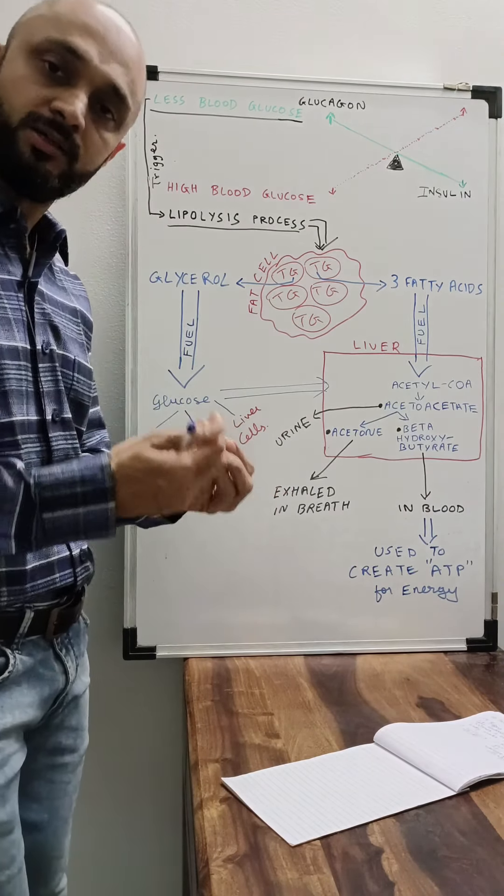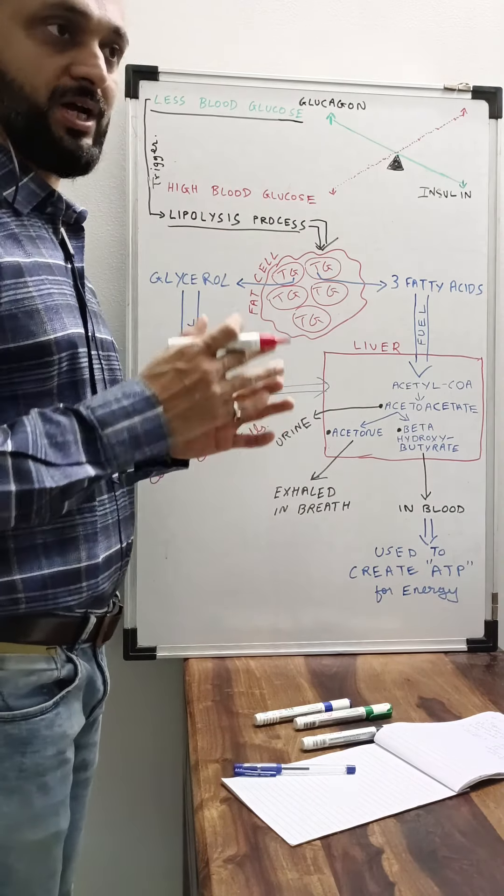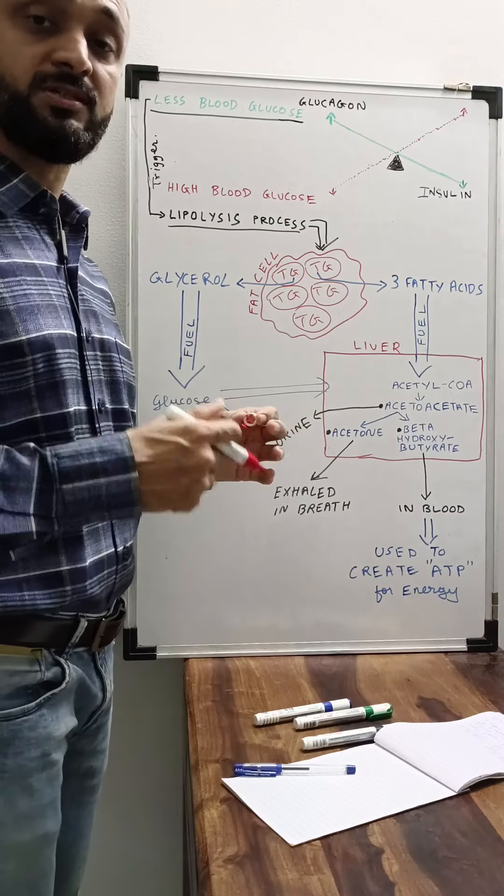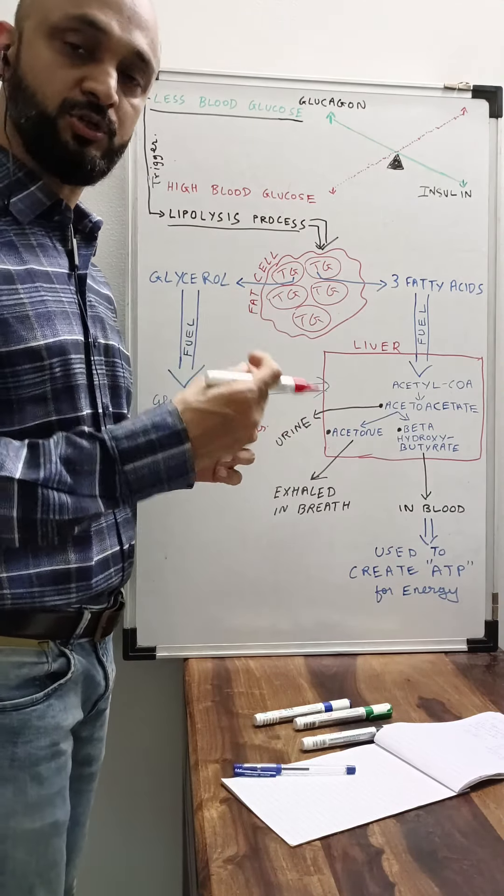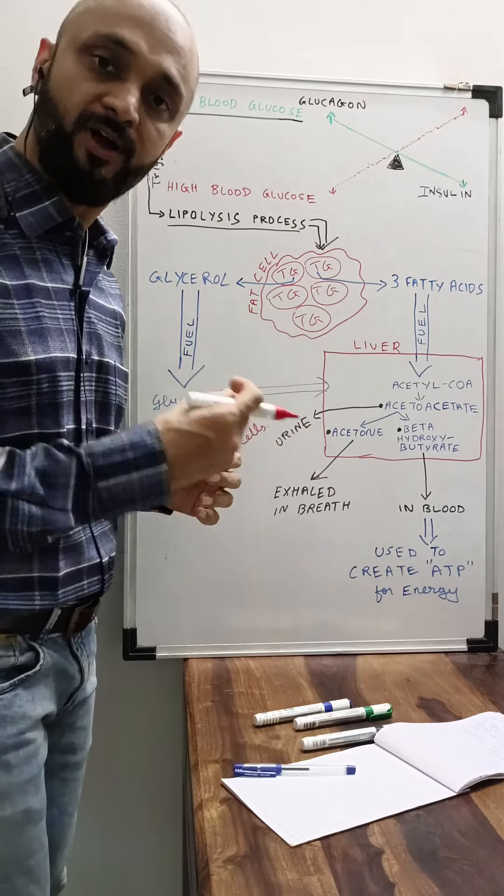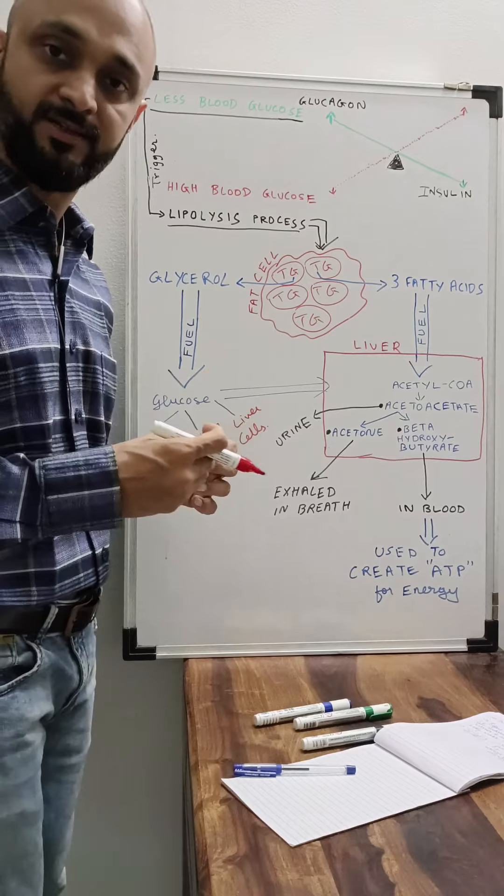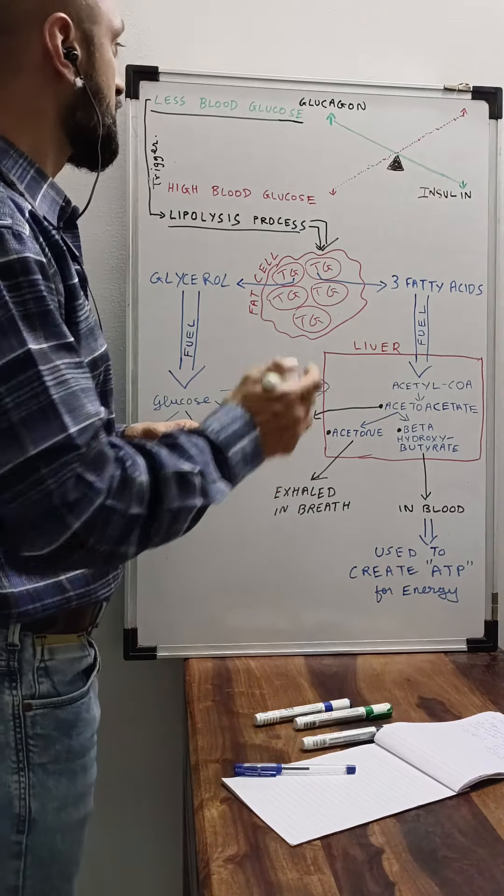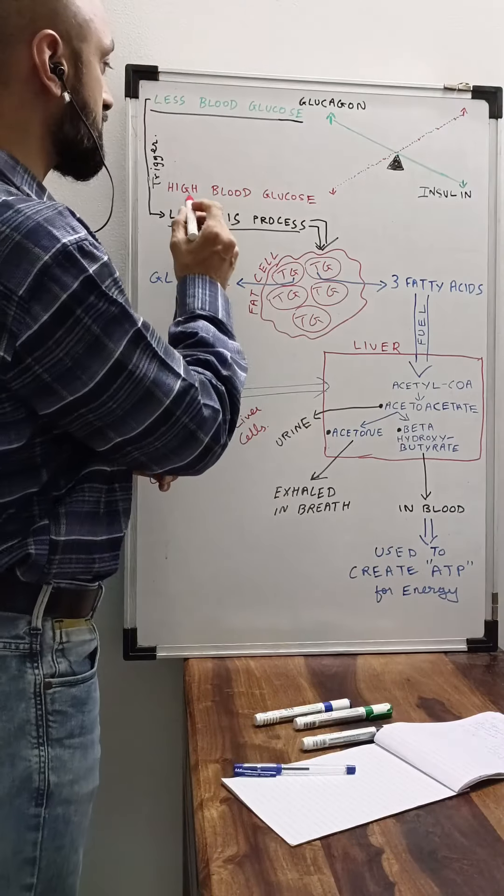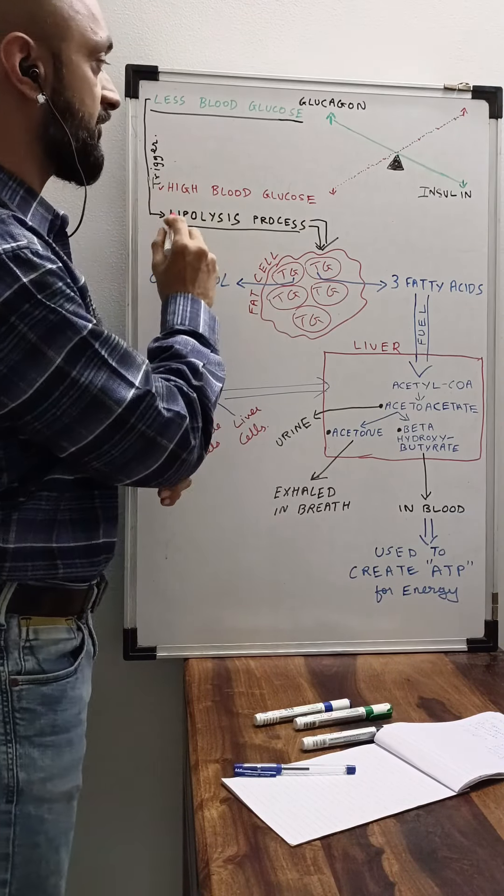In one of my previous videos I explained what causes fat gain, what situation makes the body store fat as subcutaneous fat in the fat cells or adipocytes. There are two types of situations: one is when blood glucose level is high, and the other is when there is less blood glucose. Here you can see I have mentioned this.